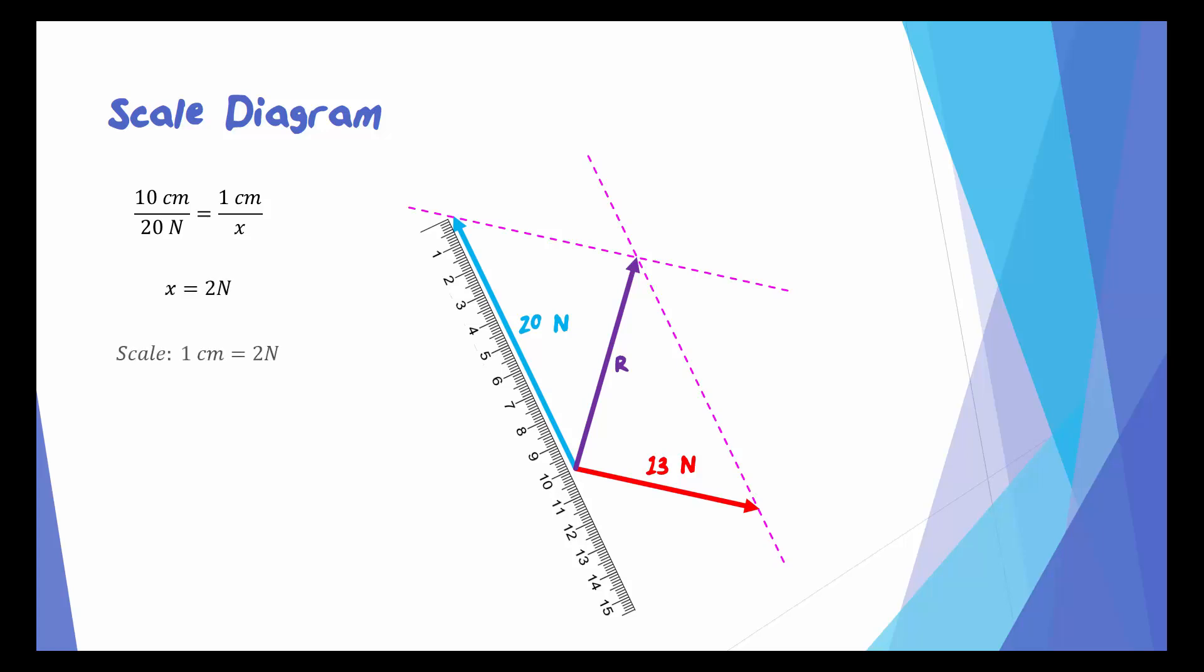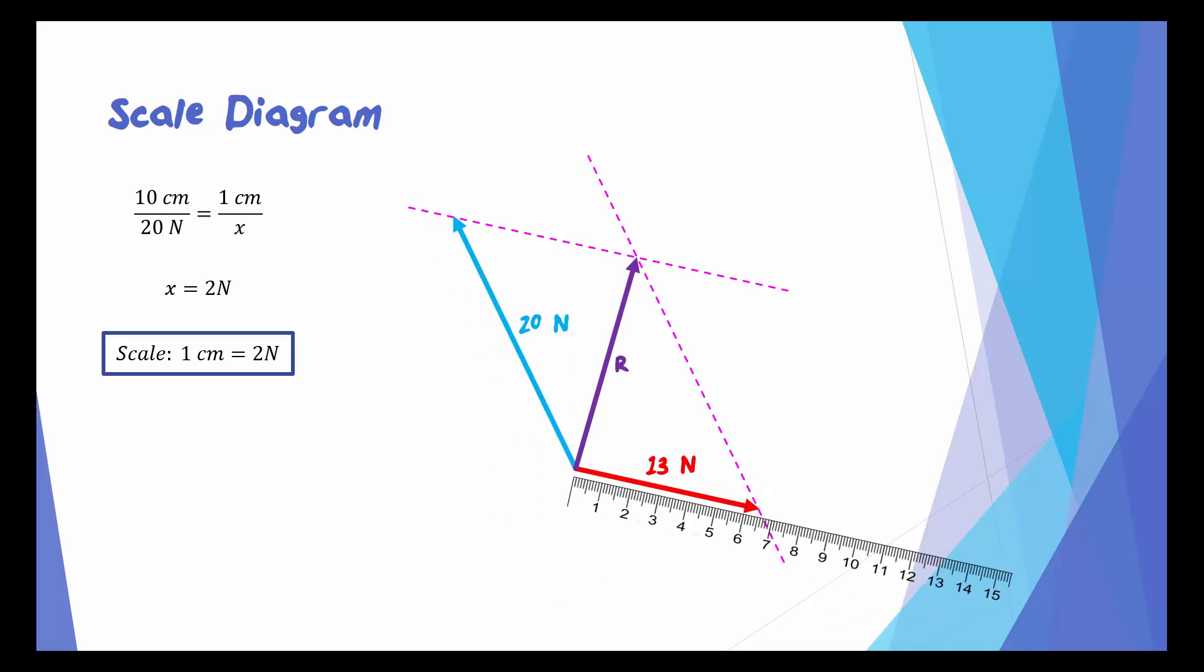Let's confirm that by looking at the 13 Newton force. The 13 Newton force is 6.5 centimeters long, and setting up a similar proportion, we once again find that the scale is 1 centimeter equals 2 Newtons. Excellent.